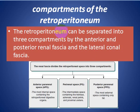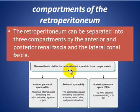The retroperitoneum can be separated into three compartments: the anterior pararenal space, the posterior pararenal space, and the perirenal space, divided by the anterior and posterior renal fascia and the lateral cone fascia.